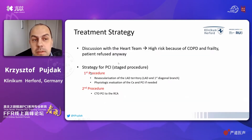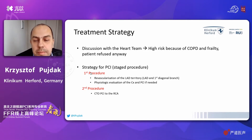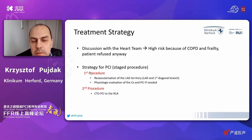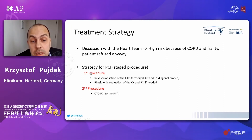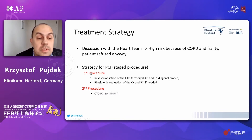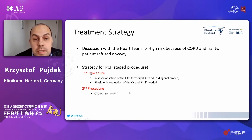The treatment strategy was first discussed with the heart team. The patient was accepted for surgery with slightly elevated risk due to COPD and frailty, but he refused. So we talked to him about performing PCI in a planned staged procedure: first, revascularization of the LAD territory and evaluation of the circumflex artery, and in the further course, opening of the CTO of the right coronary artery.